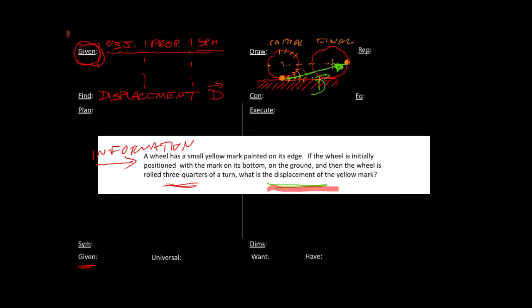So we have an object called a wheel. It has one property — it has a radius. And it's turned three-quarters of a turn. That's what we have as our data; that's what we're going to move forward with. The only thing we want to see in our answer is r — everything else should just be a number or a direction. Because what we're looking for is this displacement vector, and the displacement is basically the difference between two vectors: the final position minus the initial position.